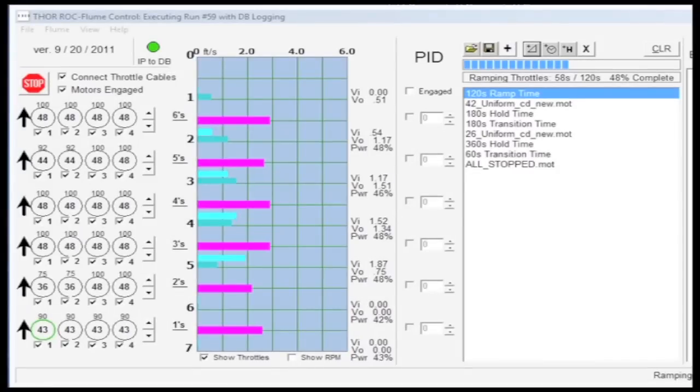The ROC Flume's control computer provides water speed control at each depth, and run schedules can be programmed with a few simple mouse clicks. A single flume run may last only a few minutes or can span hours.